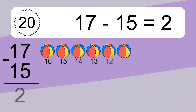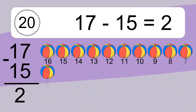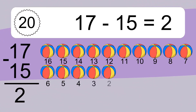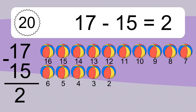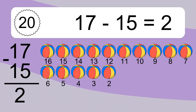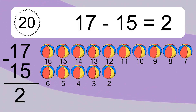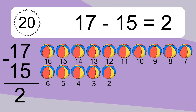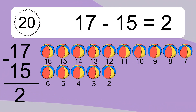17 minus 15 equals 2. Let's count it: 16, 15, 14, 13, 12, 11, 10, 9, 8, 7, 6, 5, 4, 3, 2.